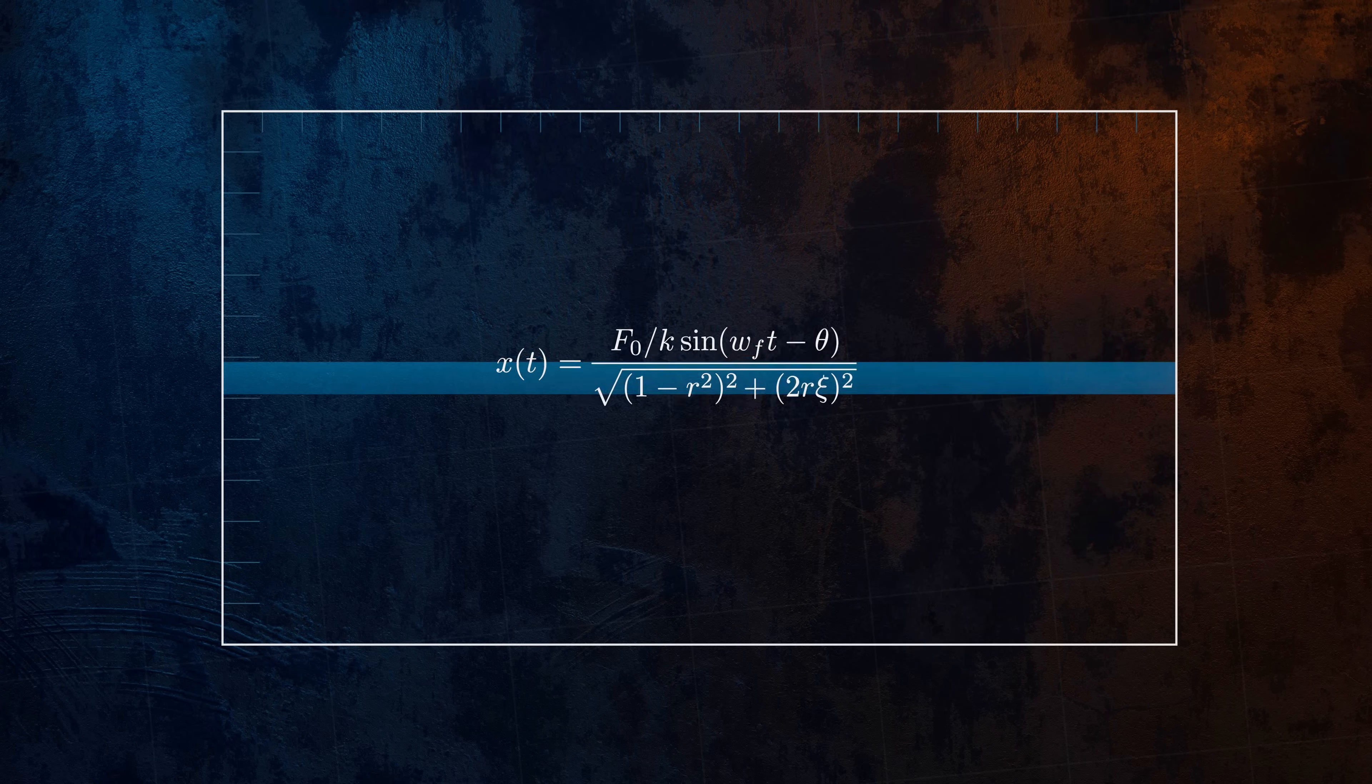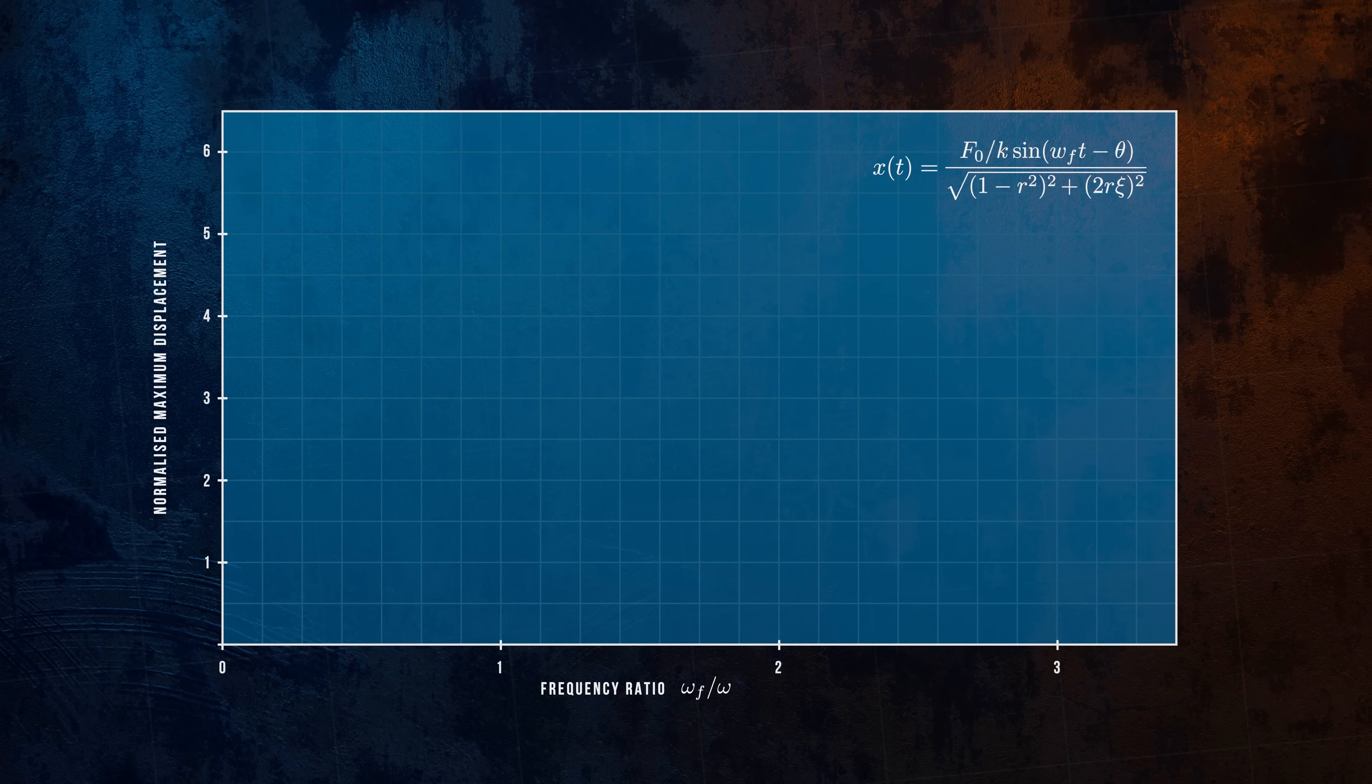Let's plot the normalized maximum displacement against the frequency ratio. For an undamped system, the damping ratio is equal to zero. So when the forcing and natural frequencies match, the displacement becomes infinite.